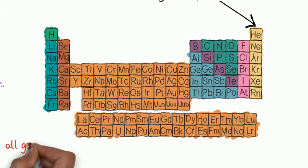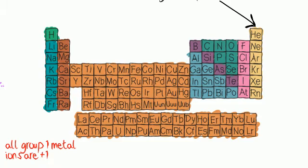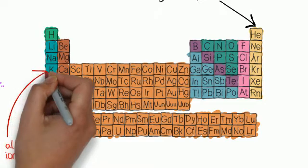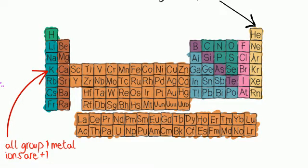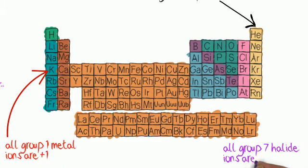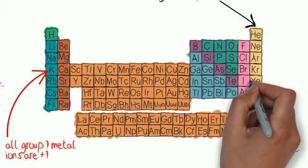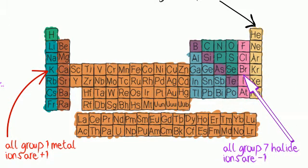Group 1 metals react with non-metals to form ionic compounds in which the metal ion has a charge of plus one, because they have one electron in their outer shell that they lose to achieve a noble gas configuration. Group 7 halogens react with metals to form ionic compounds in which the halide ions have a charge of minus one, because they need to gain one electron to achieve a noble gas configuration.